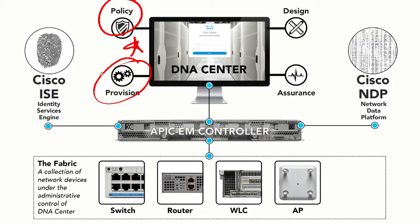Provisioning covers the onboarding of people and devices from the sites all the way to the IP addresses. Design includes building your site hierarchy, your image management, and the network profiles — it can greatly simplify provisioning and a whole lot of other activities. Assurance is the final module that you might not even be used to thinking was possible. By definition, assurance means freedom from doubt, and when you apply that to the operation of your network, that's where things get really interesting.